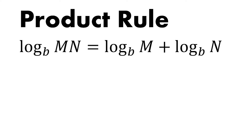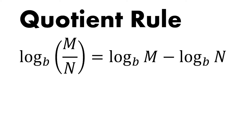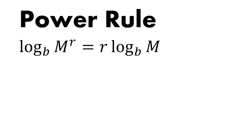Study the properties of logarithms: the product rule, quotient rule, and power rule. For example, the product rule states that log base B of m times n equals log base B of m plus log base B of n. If terms are divided, you get a difference of two logarithms. The power rule states that log base B of m raised to the power r equals r times log base B of m.